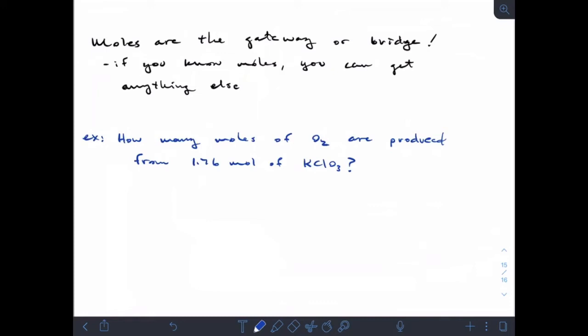All right, let's get a little bit deeper into stoichiometry, still in chapter three here. And the most important aspect of doing stoichiometry is to get to moles. Moles are the gateway or the bridge.